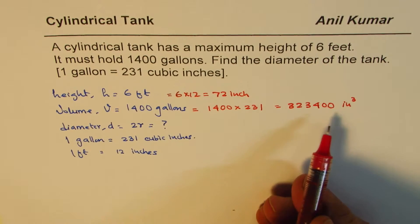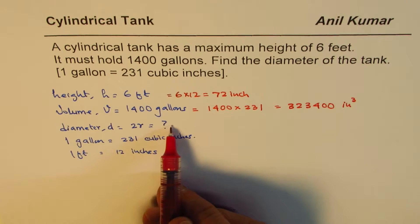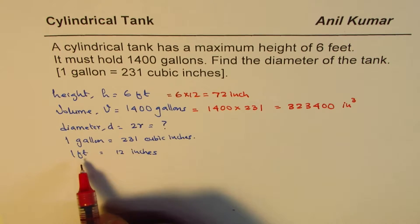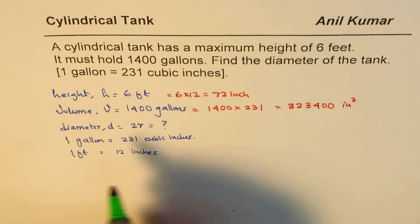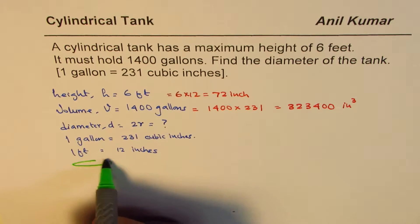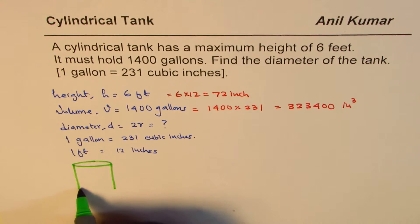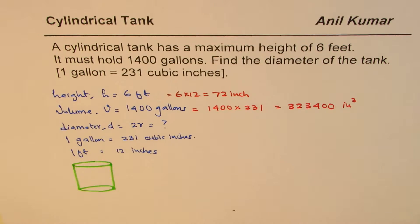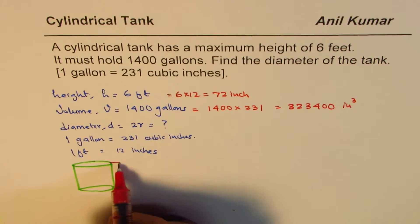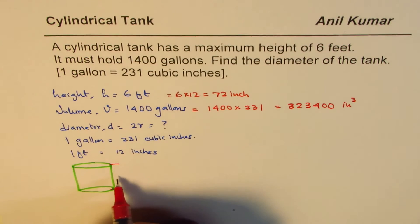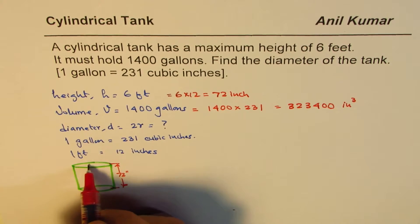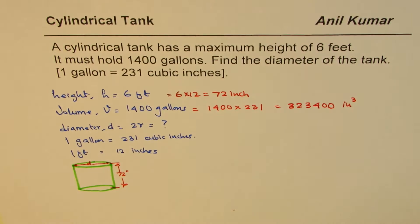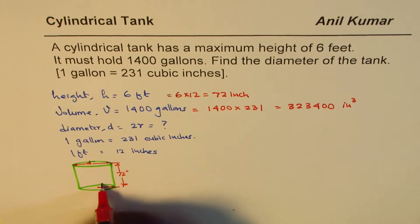Now let's look at the diagram of what we're trying to find. We have a cylindrical tank whose maximum height is given. The height of the tank is 72 inches. We need to find the diameter, and we'll call the radius r.